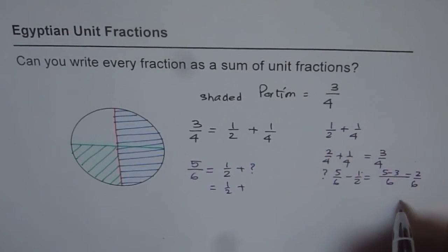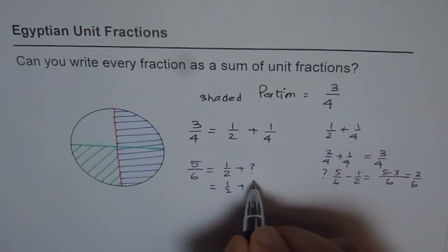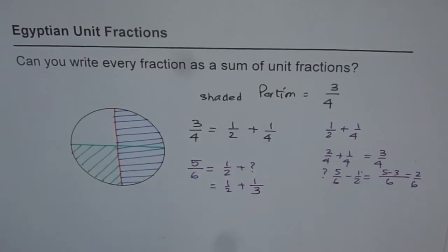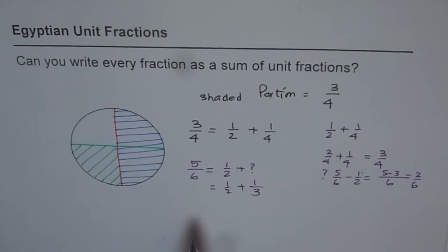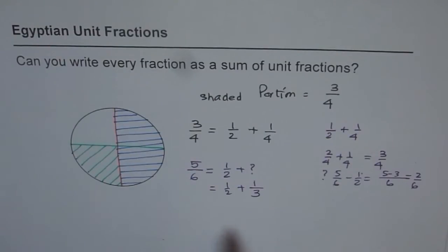Two-over-six can be written as one-over-three. So we can write one-over-three here. So five-over-six can be written as one-over-two plus one-over-three. That's interesting. So you can write five-over-six also as a combination of unit fractions. Do you see that? That is very interesting.